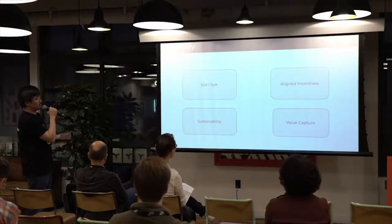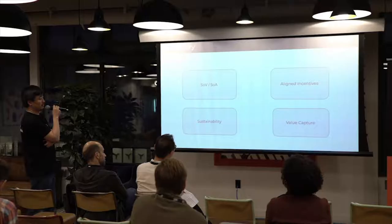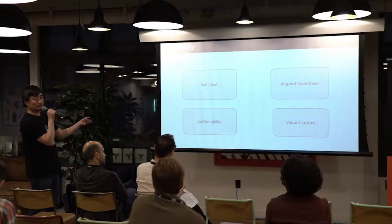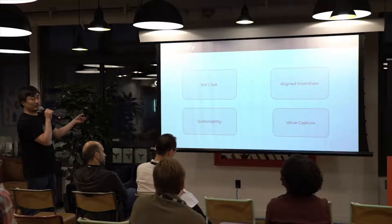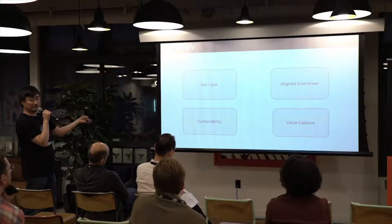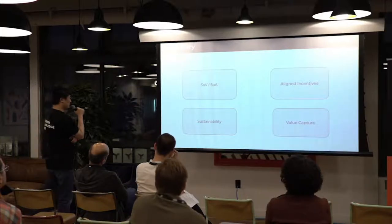In summary, the key objectives in our economic design are: moving from a transaction-based model to a store-of-value and asset-custody-based model; aligning incentives; enabling value capture; and adding a dimension of time to the economic model rather than just facilitating consensus at a moment in time. That's the sustainability angle — and that's all.